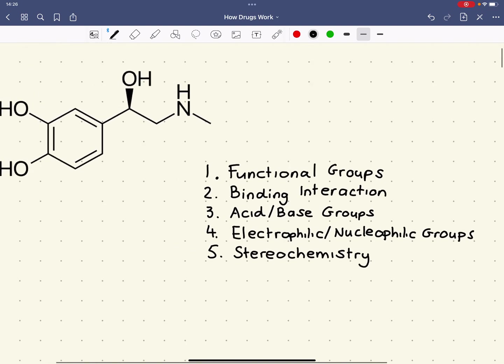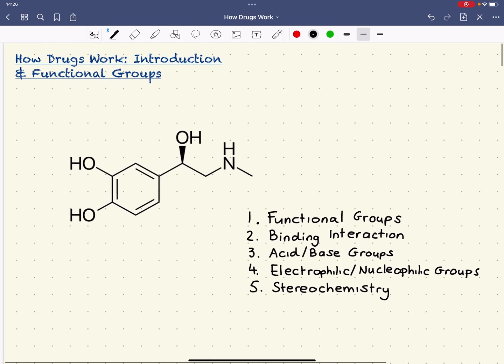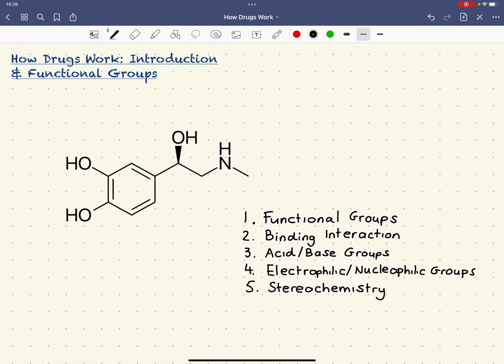Okay, so what we're going to have a look at then is the functional groups. So what I've got here is a drug, or in this case is actually an endogenous natural neurotransmitter, which is adrenaline.